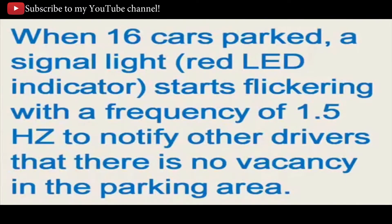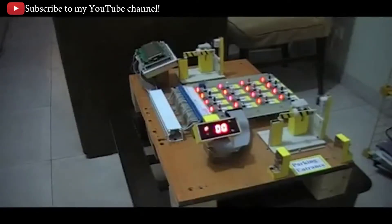When 16 cars are parked, a signal light or red LED indicator starts flickering with a frequency of 1.5 hertz to notify other drivers that there is no vacancy in the parking area. Notice on the screen that all the spots are filled up and that the red LED to the left is flickering at the frequency of 1.5 hertz.